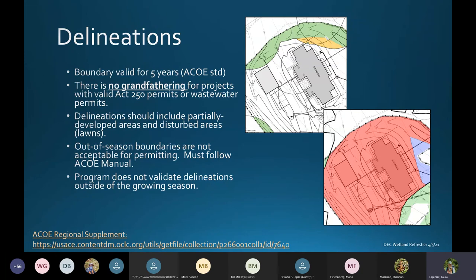You can do a preliminary boundary out of season for project planning. That is a good idea if a project is moving along, but you'll need to review and verify that delineation. Please review boundaries during the growing season after your preliminary work, and make changes preferably before the ecologist goes out to the site, so we're able to give more concise guidance once we've reviewed a site.